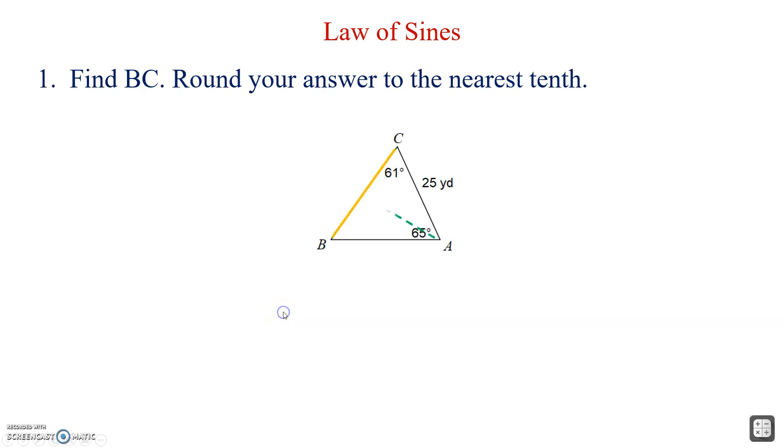Well BC happens to be opposite angle A, so BC is lowercase a, so I'll label that. We've also been given angle C, which means opposite is lowercase c, and we've also been given side b. In order to continue with this, we need two ratios. We've got the ratios of lowercase a and uppercase A. Out of the two things that we're missing, angle B or lowercase c, the only thing we can actually find is angle B. We'll find angle B by subtracting the two other angles from 180 degrees. When we substitute the values in, we find that the measure of angle B is actually 54 degrees.